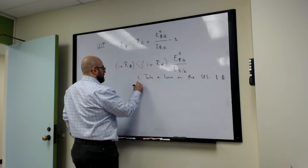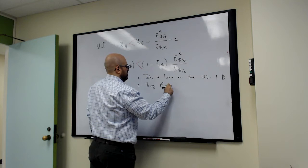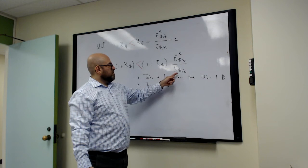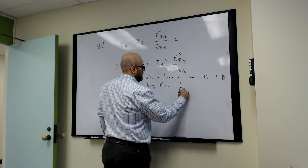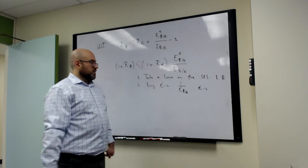Next, we will use our one dollar we borrowed and we're going to buy euros. And now the question is, how many euros can we buy with one dollar? So E is the number of dollars it takes to buy one euro. So if we have one dollar, this will be 1 over E dollar over euro. This is how many euros we will have. That's how many euros we can buy with our one dollar we borrowed.